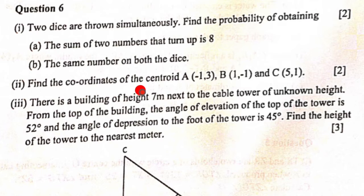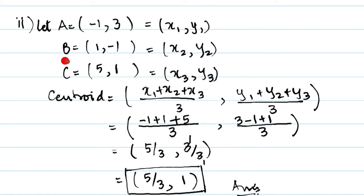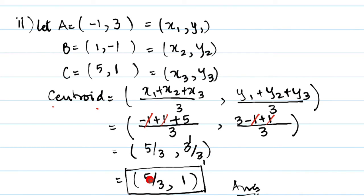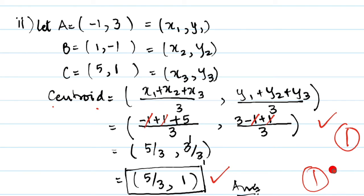Question 6, Part B: Find the coordinates of the centroid of triangle ABC with given vertices. Using centroid formula: ((x1+x2+x3)/3, (y1+y2+y3)/3). Substituting the values gives the x-coordinate as 5/3 and y-coordinate as 1. The centroid is (5/3, 1).